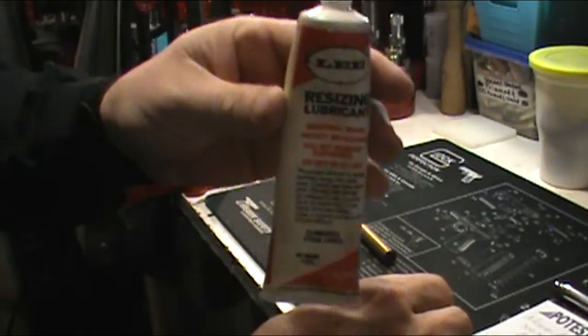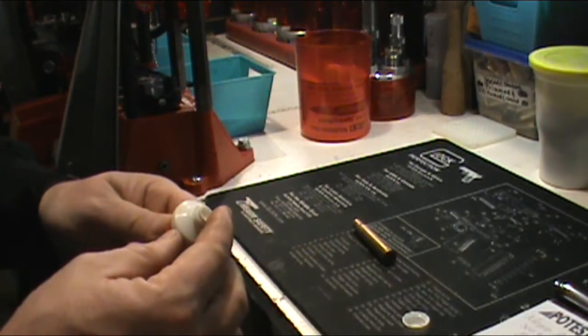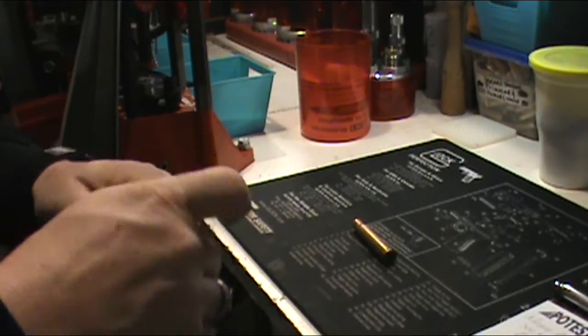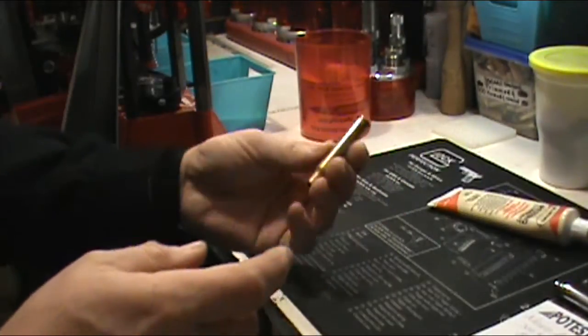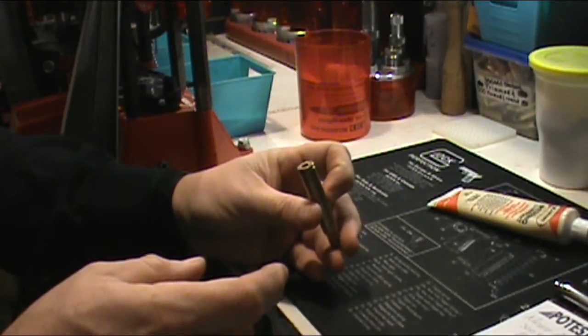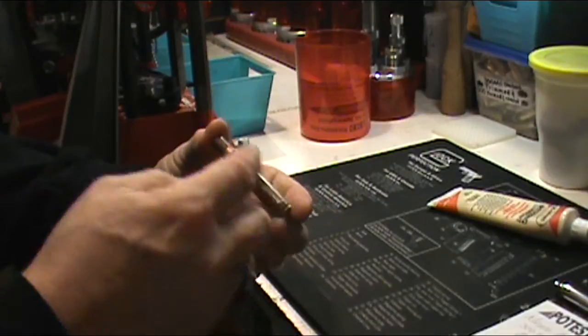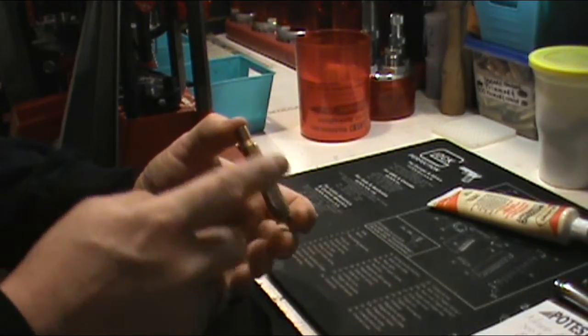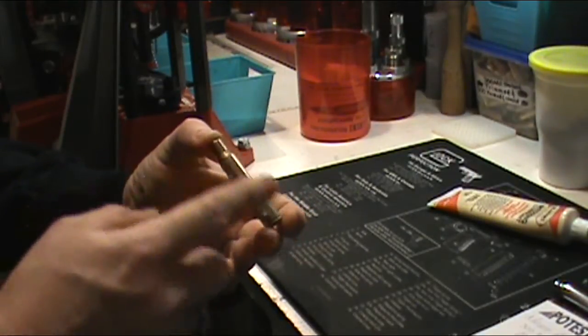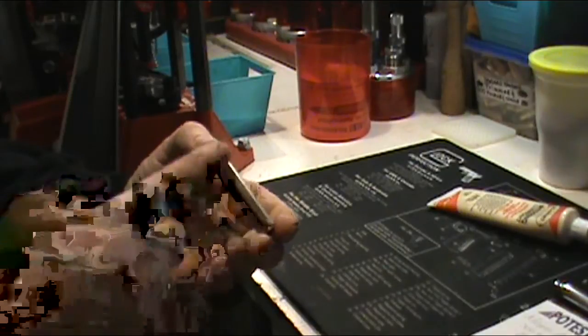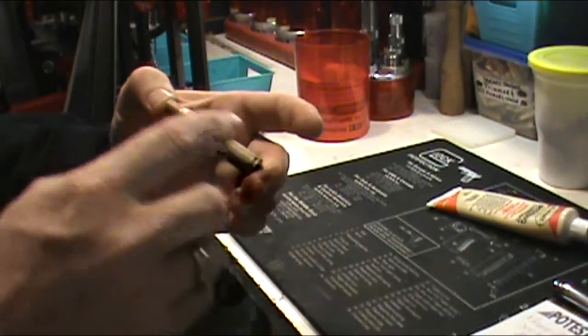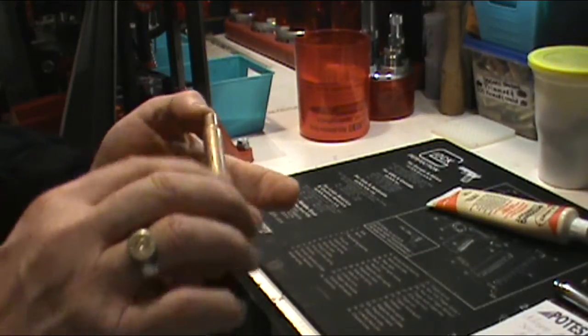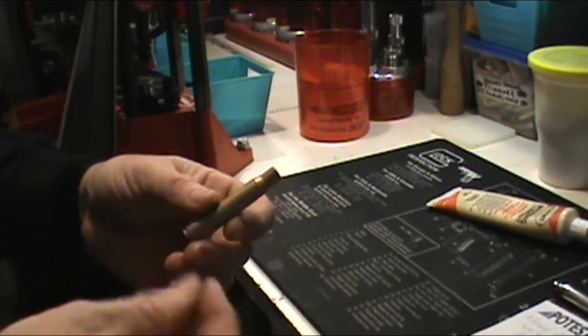I'm going to take the Lee lube paste, don't need a lot, just a little bit. Take this old military FAA 53, so that means it was made back in 53. FAA is for the manufacturing location of where this brass was made. I'm just trying to size this case, try to get the neck where I can put a bullet in it.